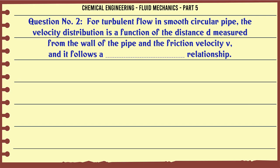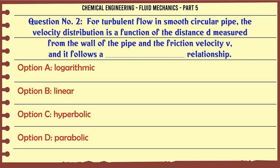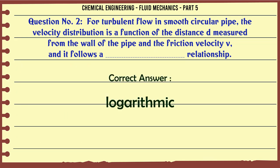For turbulent flow in smooth circular pipe, the velocity distribution is a function of the distance d measured from the wall of the pipe and the friction velocity v, and it follows a relationship: a) logarithmic, b) linear, c) hyperbolic, d) parabolic. The correct answer is logarithmic.